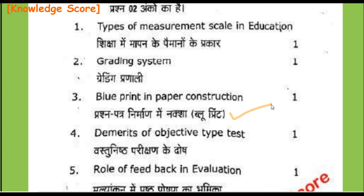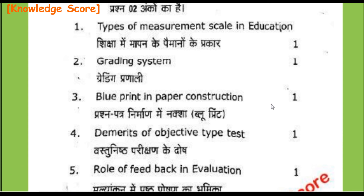Students, please note: Section C is very short answer, so at least 1 to 2 pages should be written per answer. Section B is short answer, so write 2 to 3 pages per answer. And Section A is descriptive answer questions, so at least 4 to 5 pages should be written per answer.